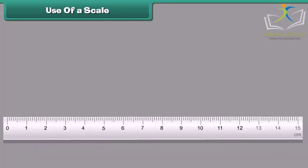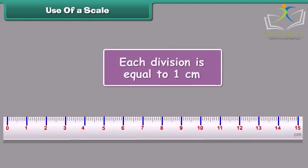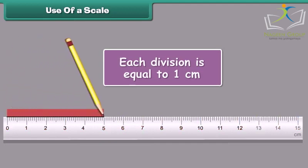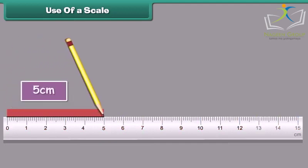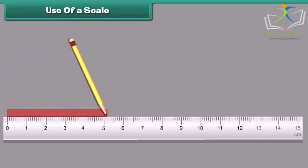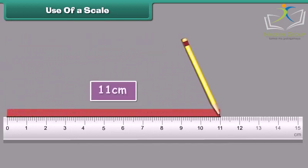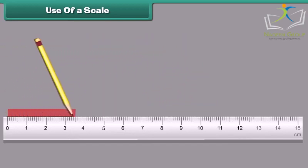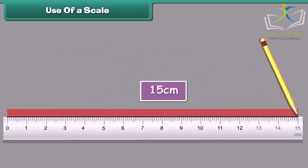Look at this ruler. Its margins show many divisions. Each division is equal to 1 cm. The numbers are written from 0 to 15. From 0 to 5, we get 5 cm. From 0 to 11, we get 11 cm. From 0 to 15, we get 15 cm.